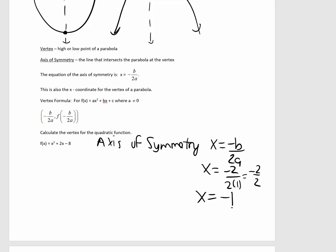So, the equation for the axis of symmetry is x = -1. Now, let's plug in -1 into the function. When we simplify, we get this. So, the vertex is (-1, -9).